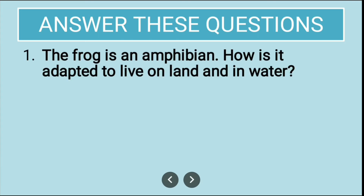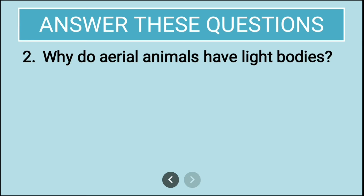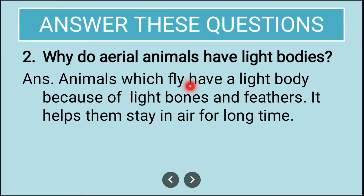Now for long answers. First: frog is an amphibian — how is it adapted to live on land and in water? Frogs have moist skin that helps them to breathe in water, and also have lungs that help them to breathe on land. Thus, the frog is adapted to live on land as well as in water.